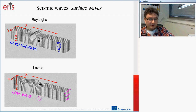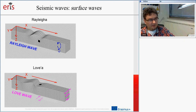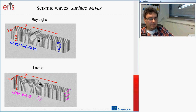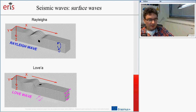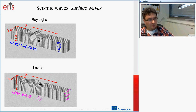We also have surface waves, which do not travel through the Earth but rather along the surface. There are two kinds of surface waves presented here. What is important to know is that surface waves are the most significant during an earthquake — it is these surface waves, close to the epicenter, that are connected with the damages caused by an earthquake.